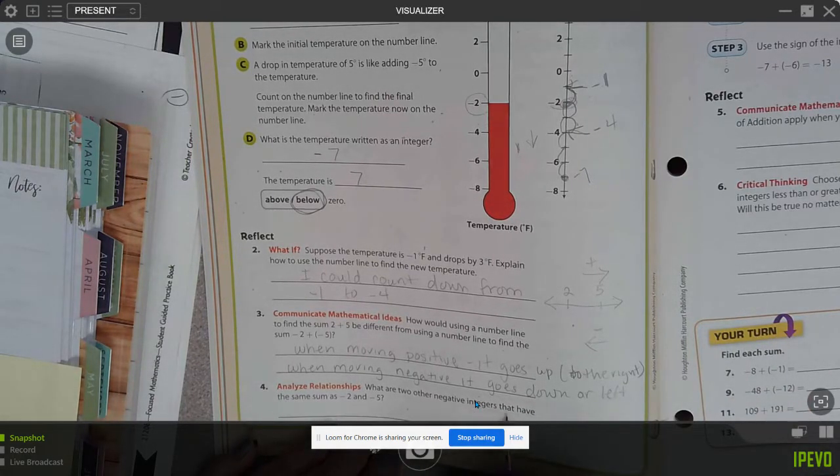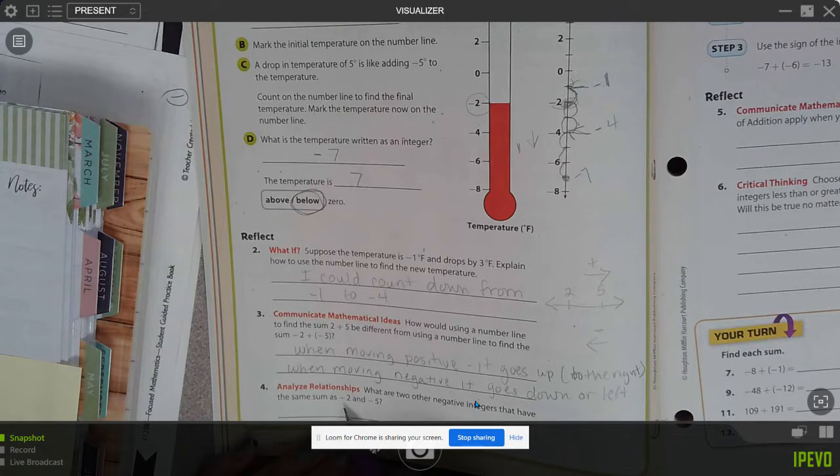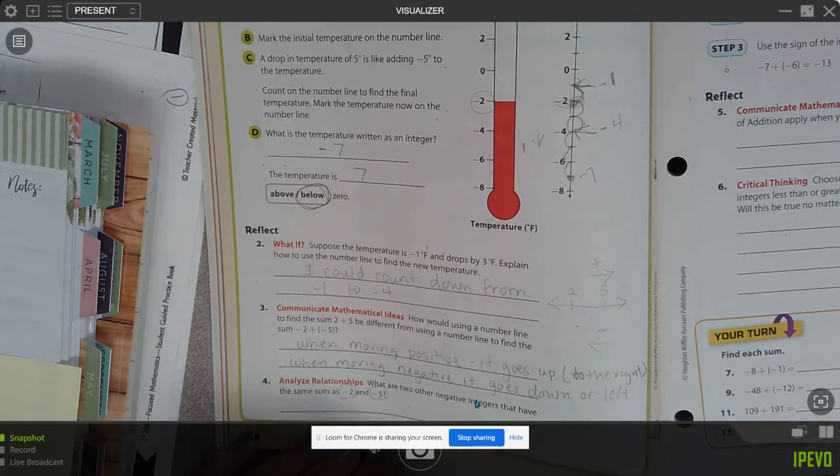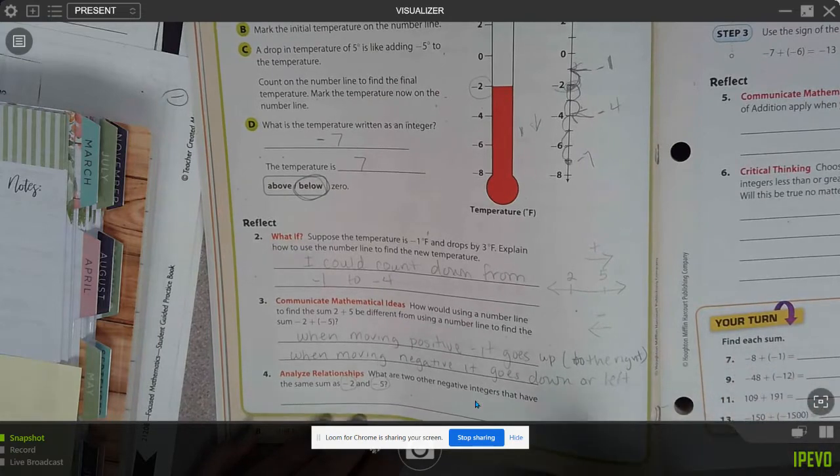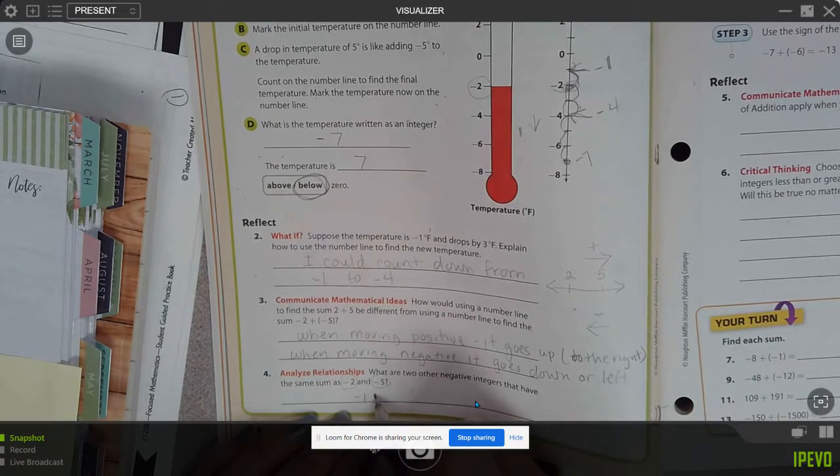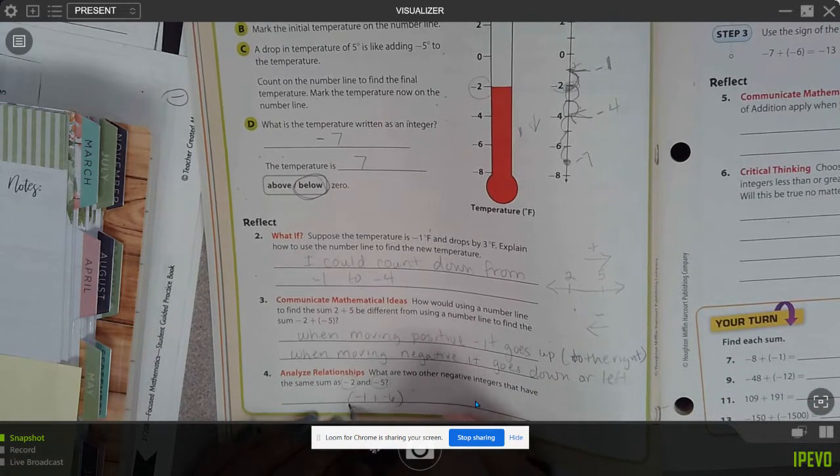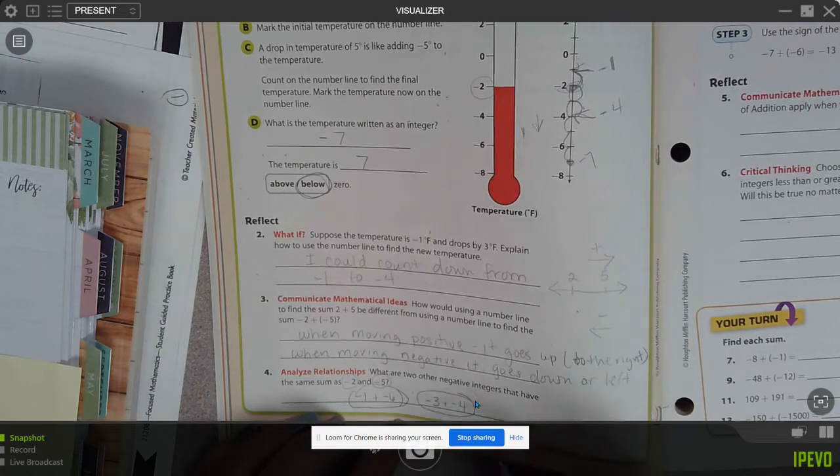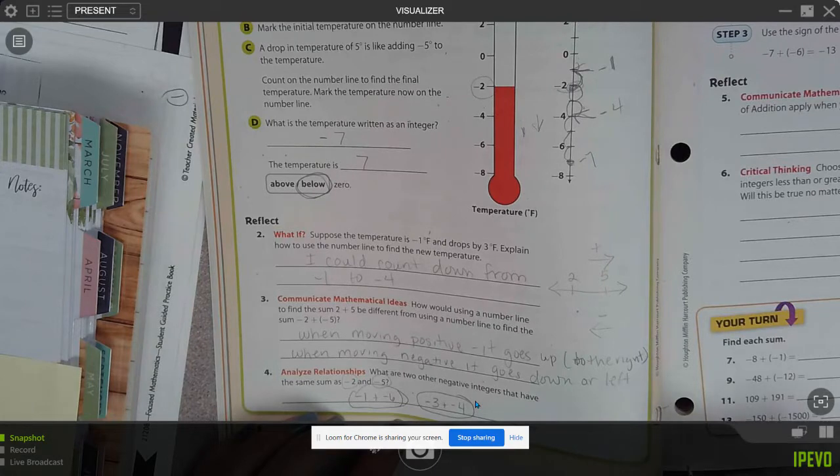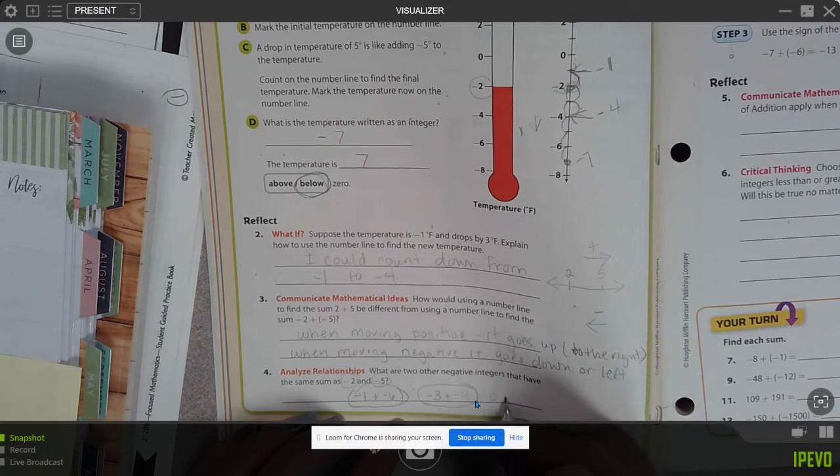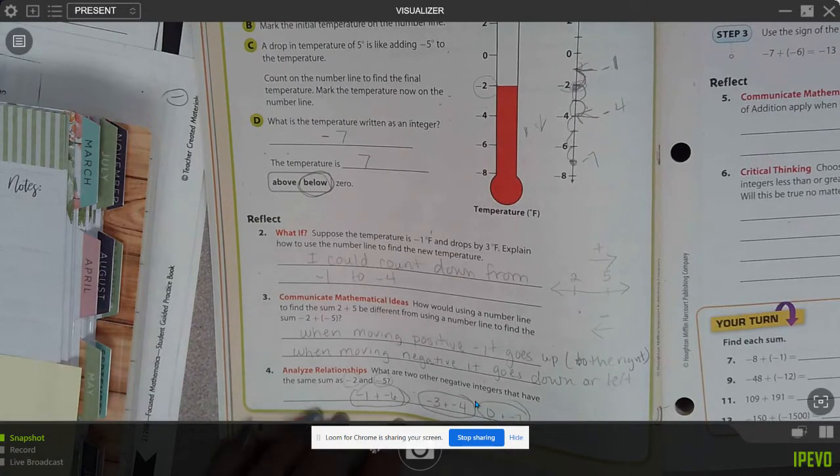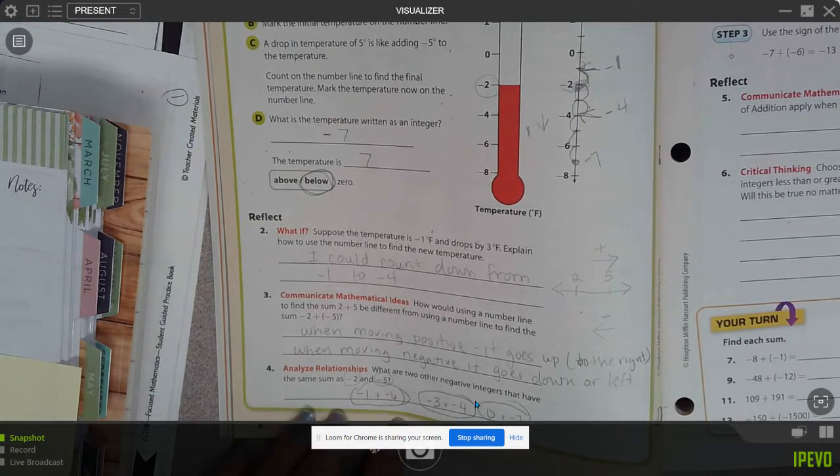What are two other integers that have the same sum, negative two and negative five? Well, that would be the same. I need to make some ways to make negative seven. So negative one plus negative six will make seven. Negative three plus negative four would make seven. Zero plus negative seven would make negative seven. That's all it's wanting is some fact families.